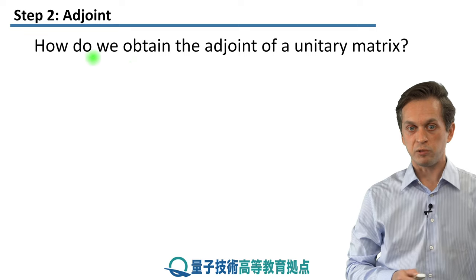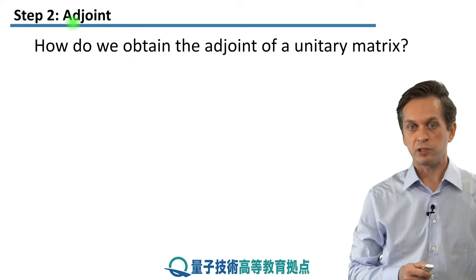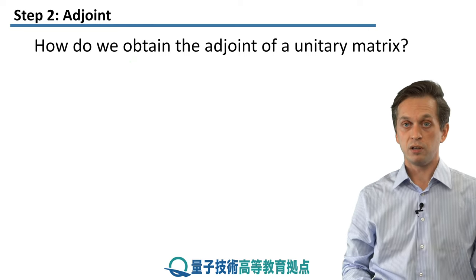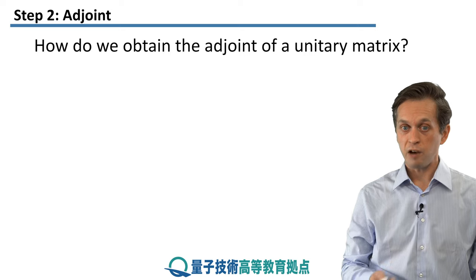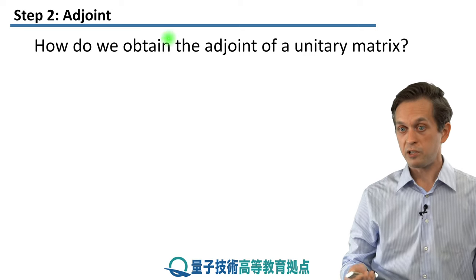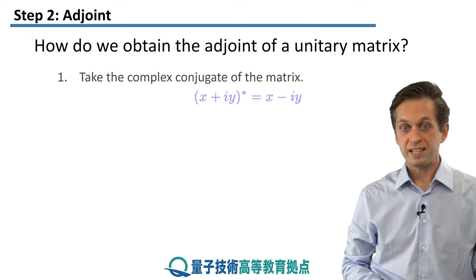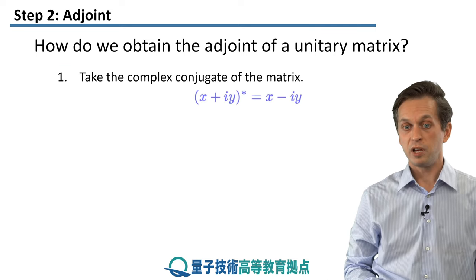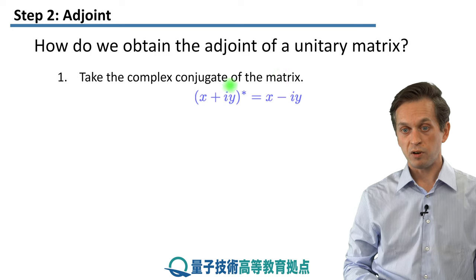Now, we mentioned this adjoint. So far, it's been a rather abstract notion that can undo the effect of a unitary operation. How can we actually systematically compute this adjoint given a unitary matrix? It's actually very simple. There are two steps to it. You take the complex conjugate of the matrix.